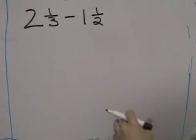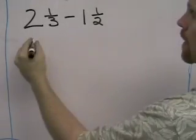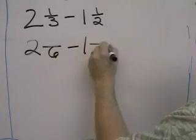Well here's another subtraction problem, but this time you're going to find out we have to borrow. First we get our common denominator, which in this case is 6.